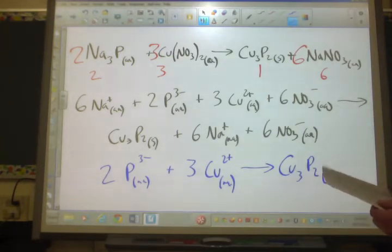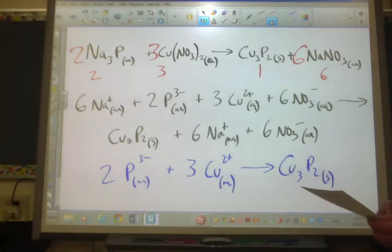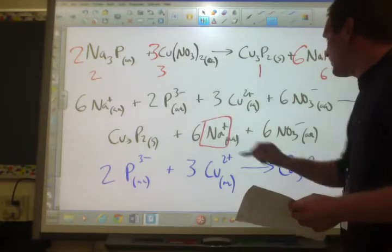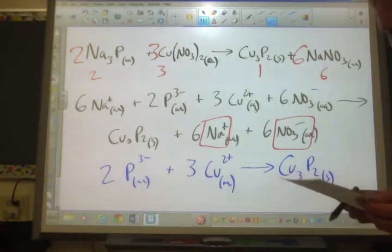Number four, identify the spectator ions. Spectator ions are just whatever was aqueous before and aqueous after. Sodium ion, nitrate ion. Those are my two spectators.